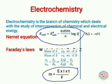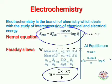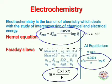ΔG = −nFE is another equation we will be using. At equilibrium, E cell = 0, so the Nernst equation becomes: E° cell = (0.0591 / n) × log K, where Q becomes the equilibrium constant K at 298 K.